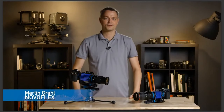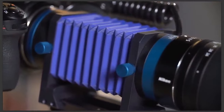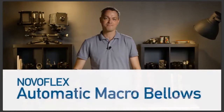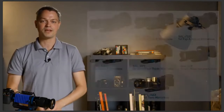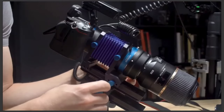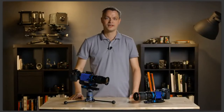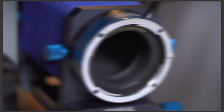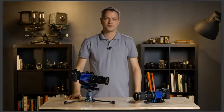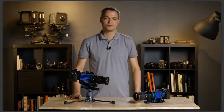NovaFlex Bellows systems are renowned for quality, construction, versatility, and durability. Today we are introducing the latest addition to the NovaFlex Bellows lineup: the new automatic macro bellows. These new automatic bellows are made for a variety of popular camera systems, including compact mirrorless systems. Easy-to-carry smart bellows transfers all data from lens to camera and camera to lens, giving all the information you would normally get with a lens attached directly to the camera. NovaFlex automatic macro bellows measure just 5.7 inches long and 3.5 inches wide.